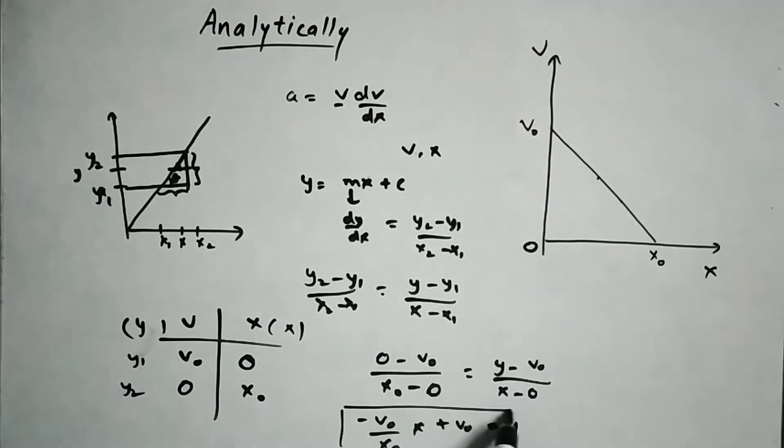v0 and this x plus v0 will be equals y. Now from this equation as well, you can see that the multiplier of x is this quantity which is a negative one since v0 and x0 are positive.